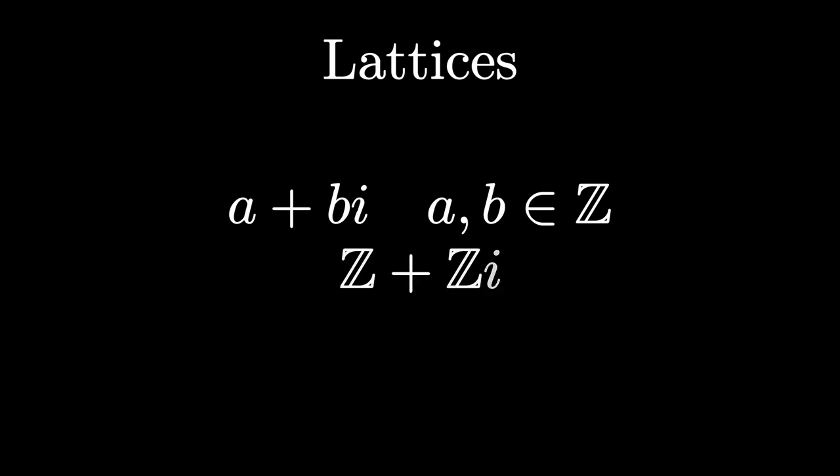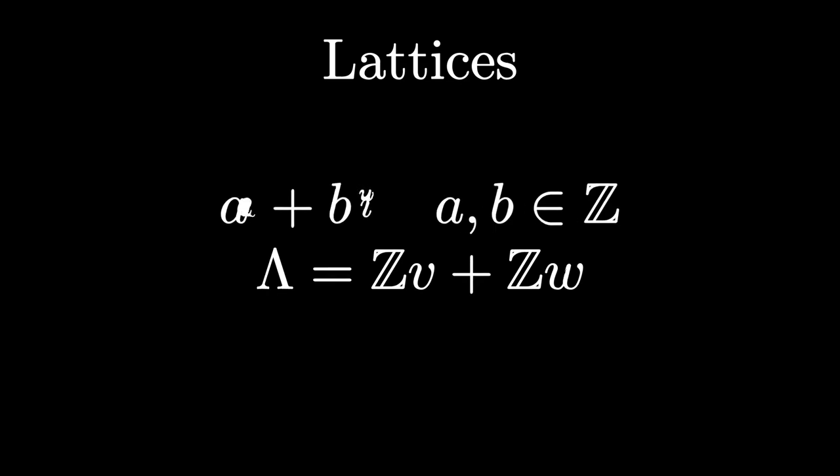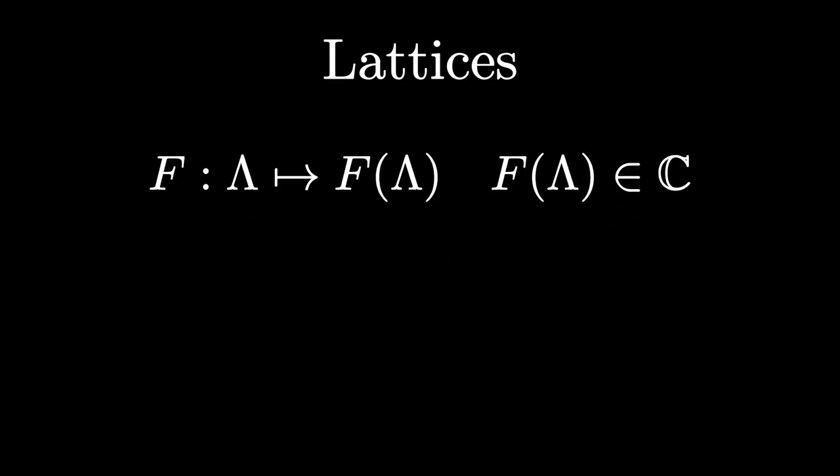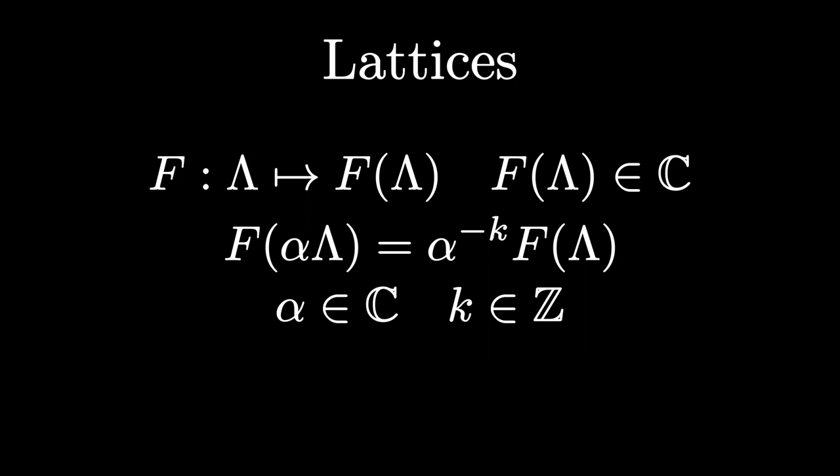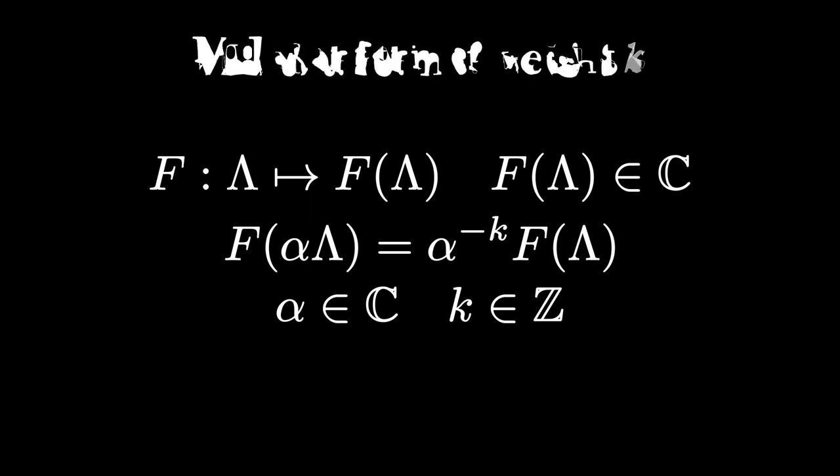Modular forms can be described with what's called lattices of complex numbers. These are all the complex numbers of the form a plus bi such that a and b are integers, denoted z plus zi. Furthermore, we can generate new lattices using two complex numbers v and w to get some lattice lambda equals zv plus zw, which contains complex numbers of the form av plus bw for integers a and b. Then we can define some function f that takes the set of lattices in c and gives some complex number that satisfies the equation f of alpha lambda equals alpha to the negative k times f of lambda, where alpha is a complex number and k is an integer. If such a function f satisfies a few other conditions regarding differentiability and boundedness, then it's called a modular form of weight k. This is a very surface level explanation, but it turns out that modular forms appear frequently in many aspects of mathematics. In fact, Ramanujan's work on the partition function p actually involved modular forms.